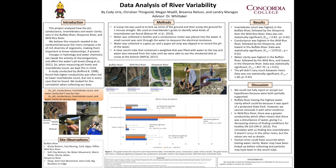We believe that this research is important to understand the relationships, if found to be present, between invertebrate count, pH, conductance, and water clarity to further preserve the land around the water. The rivers around us here at Concordia compose a lot of rich diversity of organisms, so preserving the habitat for these organisms is very important.